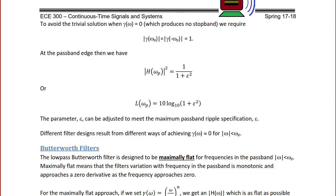To avoid the trivial solution where γ(ω) = 0, we require that |γ(ωp)| = |γ(−ωp)| = 1. At the pass band edge, |H(ωp)|² = 1 / (1 + ε²), where ε can be adjusted to meet the maximum pass band ripple specification. The loss L(ωp) = 10 log₁₀(1 + ε²) in decibels. Different filter designs result from different ways of achieving γ(ω) ≈ 0 for |ω| < ωp.